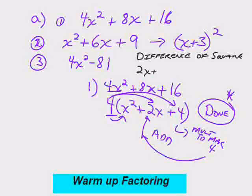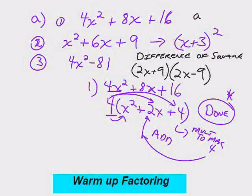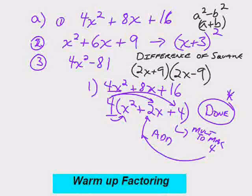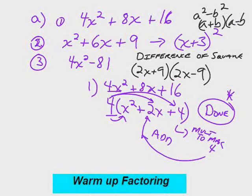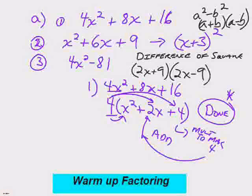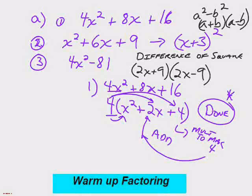You might identify number 3 as being the difference of squares. Provided that the first term is a perfect square and the second term is a different perfect square. Turns out that something squared minus something squared is just something plus the other something times the something minus the other something. Difference of squares.